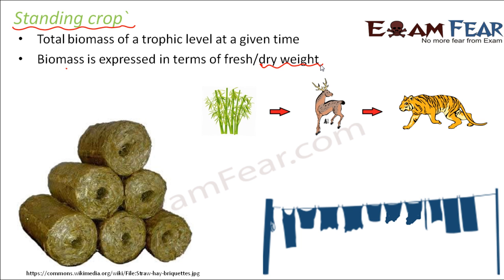To understand fresh weight versus dry weight, consider this example: when your clothes are wet and you put them out for drying, initially their weight seems more due to the presence of water. But when they get dry and all the water is removed, the weight reduces — and that is the real weight of the clothes. When they are wet, the presence of water increases their apparent weight.